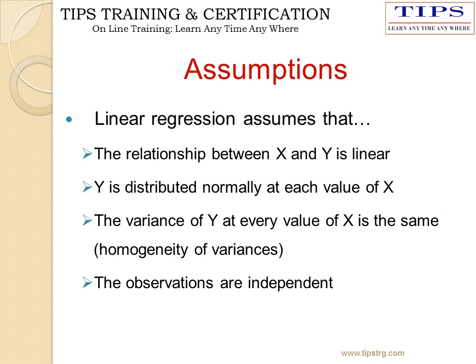Assumptions for carrying out linear regression: the relation between X and Y is linear; Y is distributed normally at each value of X; the variance of Y at every value of X is the same, that is, homogeneous; and the observations are independent.